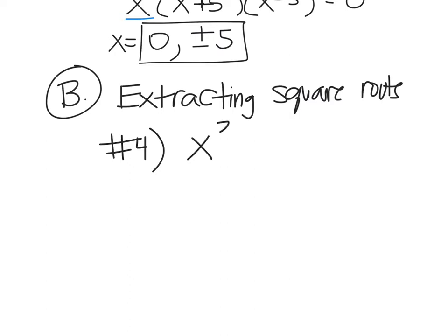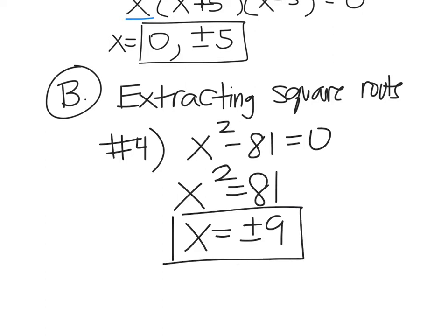So if we have x squared minus 81 equals 0, you can solve that by factoring x plus 9, x minus 9. Or you can solve it by extracting roots. Extracting roots is to add the 81 to the other side. So you get x squared equals 81. And so we're thinking of two numbers that square to give us 81. And when you take the square root, you get plus and minus 9. Because 9 squared is 81, and negative 9 squared is also 81. Two answers.